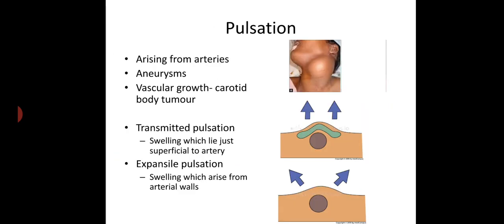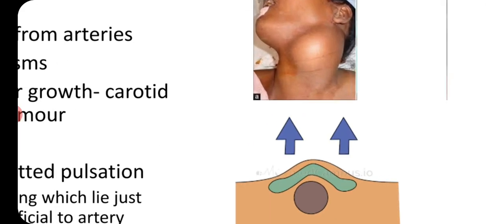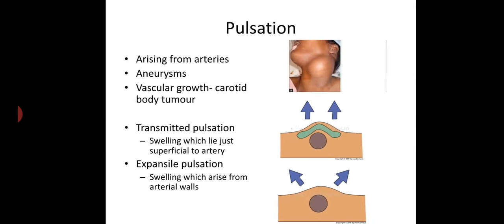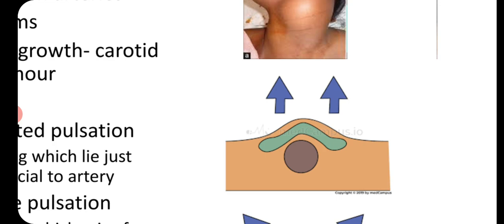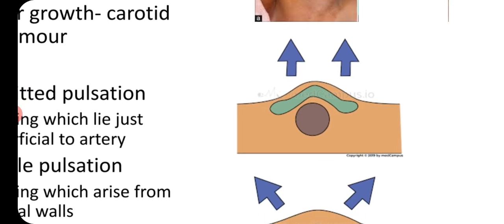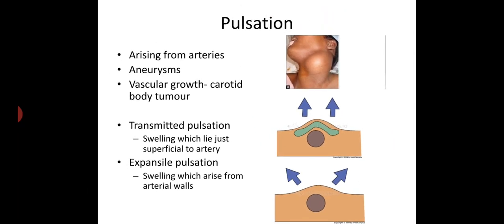Next, pulsations. Pulsations are seen in swellings which arise from arteries or which are lying over arteries — either aneurysm or vascular growth like carotid body tumour. There are two types: transmitted pulsations, seen in swellings lying superficial to an artery, and expansile pulsations, seen in swellings which arise from arterial walls.